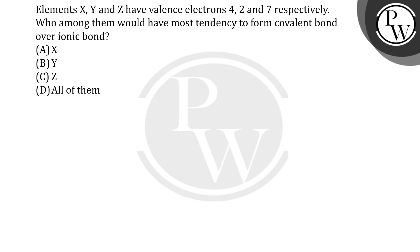Hello students, let's see the question. The question says elements X, Y, and Z have valence electrons 4, 2, and 7 respectively. Who among them would have the most tendency to form a covalent bond over an ionic bond?